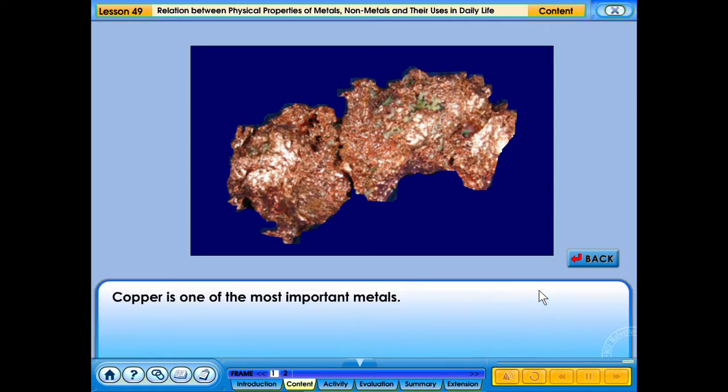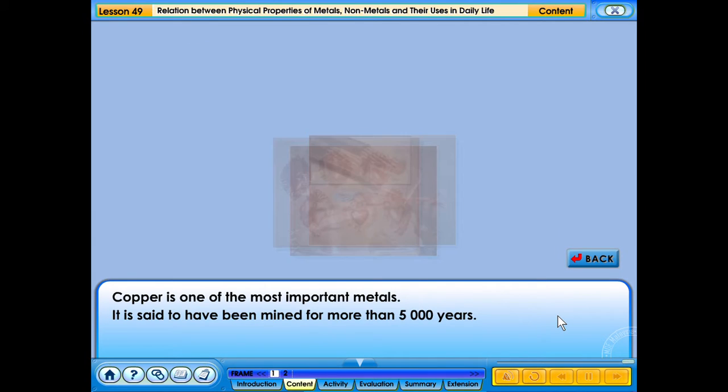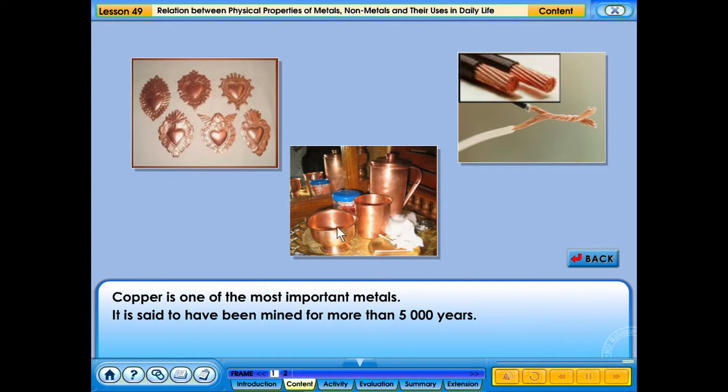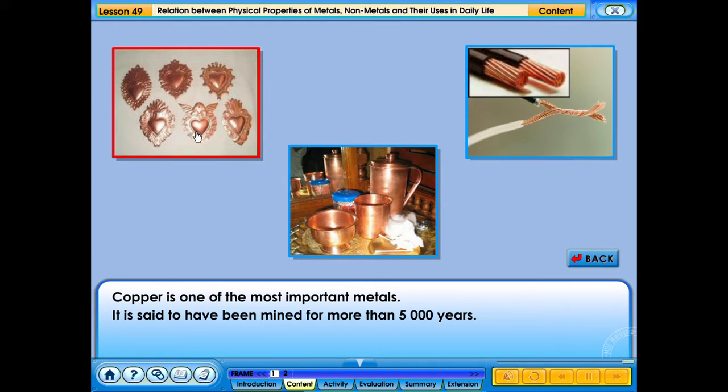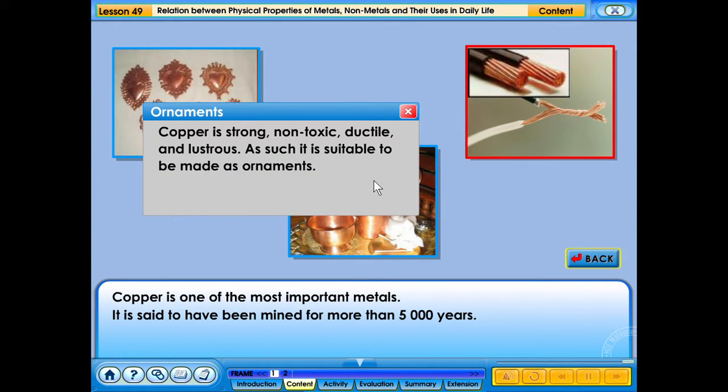It is said to have been mined for more than 5,000 years. Click on the pictures to learn about the uses of copper. Copper is strong, non-toxic, ductile and lustrous. As such, it is suitable to be made as ornaments.